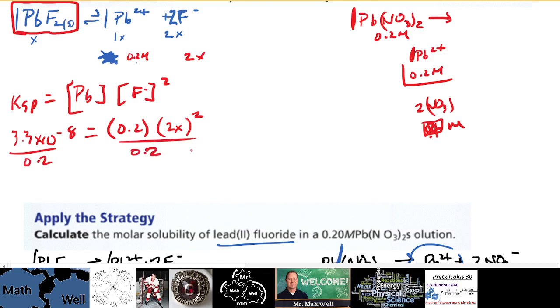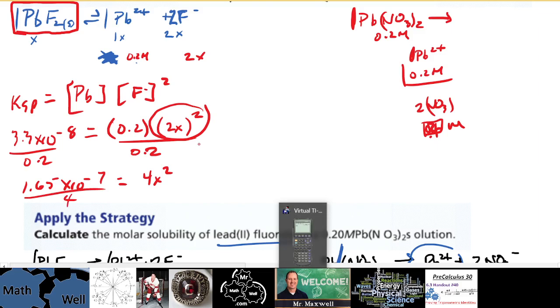And this becomes, well, let's see 3.3 times 10 to the negative 8 divided by 0.2. 1.65 times 10 to the negative 7 equals, this is going to be right here. 4X squared, I guess, 4X squared. So I'm going to divide this again by 4. No, because it's squared here. So this is, yeah, it's not just 4X, it's 2X times 2X. That's what this squared means. So that's 4X squared. That's important though. Need to know why that is.